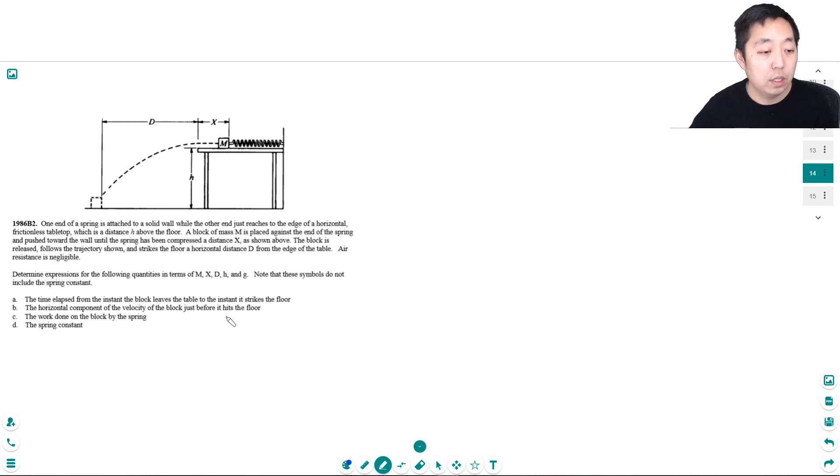Okay, so part a: the time elapsed from the instant the block leaves the table to the instant it strikes the floor. That's a kinematic question really. The time it takes from here to hit the floor—whenever you do projectile motion, the time it takes to hit the floor is just the vertical motion. So delta y is equal to v naught t plus one half a t squared in the vertical direction, y direction.